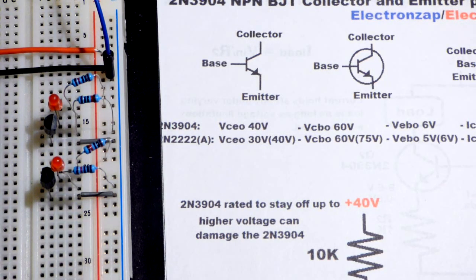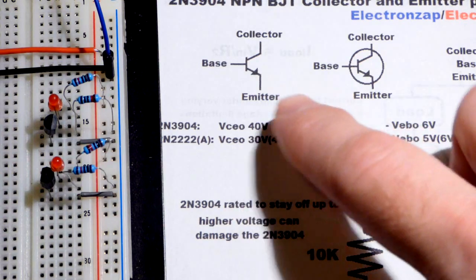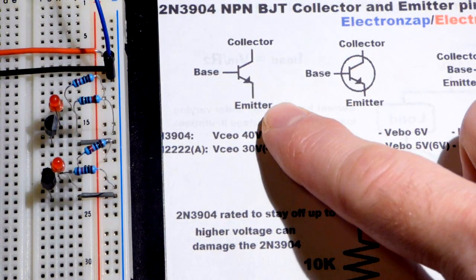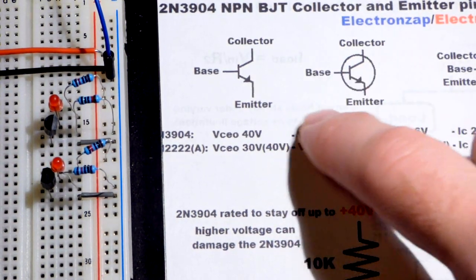So now in this video we're going to do a quick demonstration of why it's important that you don't mix up the collector and emitter when you're using a transistor.